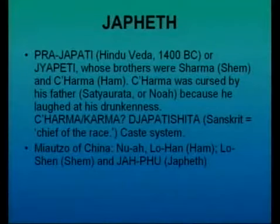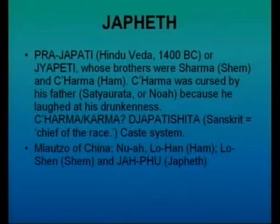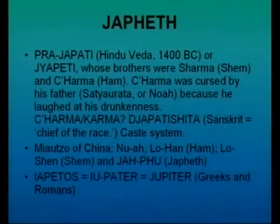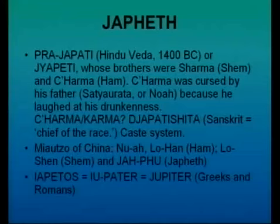The Matsu of China actually have quite an accurate record of the Genesis stories. They have Noah — obviously Noah — Lohan which is Ham, and Loshan which is Shem, and they call Japheth Jafu. When we get to the Greeks and the Romans, we have Jeppatos or Jupiter or Zeus Pater — obviously the great god of the Aryans up on Mount Olympus. It's obviously the ancestor Japheth who has been turned into a god.